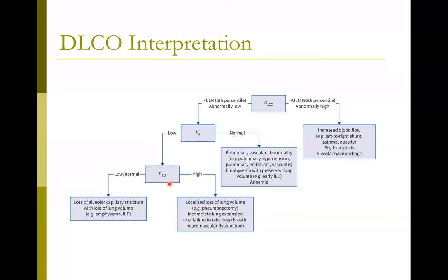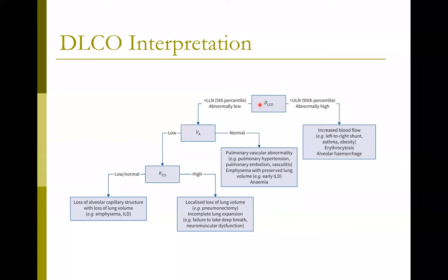In summary: think about increased DLCO as increased blood flow to the pulmonary vasculature or alveolar hemorrhage. When DLCO is decreased with normal lung volumes, this is usually pulmonary vascular disease. With reduced lung volumes, that's typically something like pulmonary fibrosis or destruction of the pulmonary parenchyma. I want to concentrate on the basics of PFT interpretation and avoid getting too deep into the differences between DLCO and KCO.